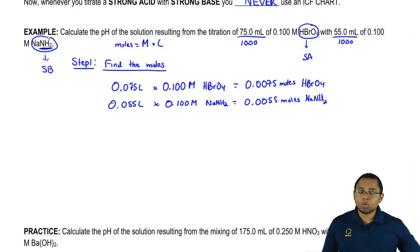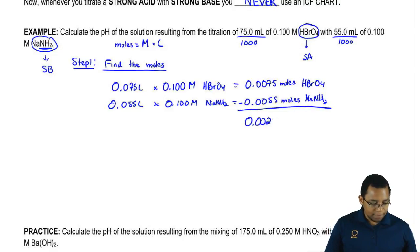Now that we found our moles, we're going to subtract the larger one by the smaller one. What you're going to say is now you have this much left of your strong acid. That's how much you have left of your strong acid.